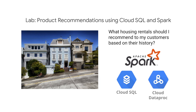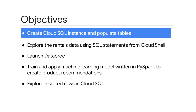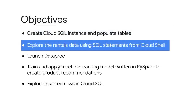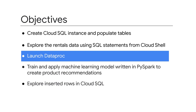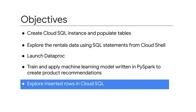Your CTO wants as little friction as possible from your existing Hadoop on-premise infrastructure, but has heard of the advantages that cloud solutions offer for auto-scaling and serverless management. So here are your lab objectives: create a Cloud SQL instance and populate the tables, explore the rental data using SQL statements using Cloud Shell, launch Dataproc, train and apply a machine learning model written in PySpark to create product recommendations, and explore the inserted rows in Cloud SQL.